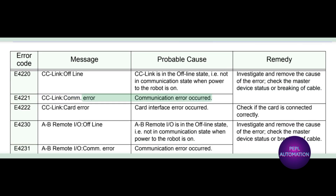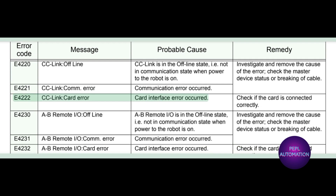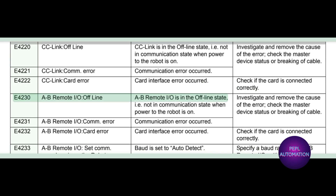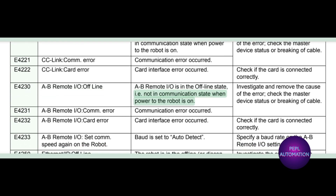E4221 CC link com error: a communication error occurred. E4222 CC link card error: a card interface error occurred. Check if the card is connected correctly. E4230 AB remote IO offline: AB remote IO is in the offline state, i.e., not in communication state when power to the robot is on.